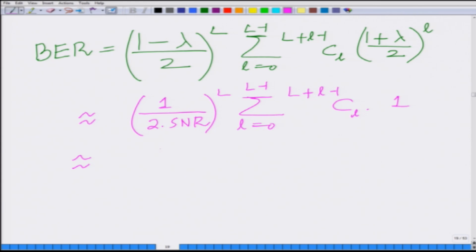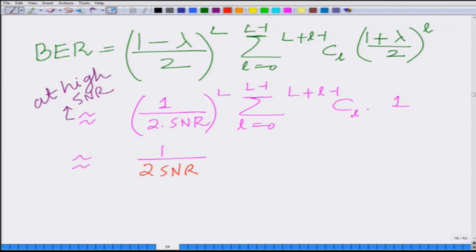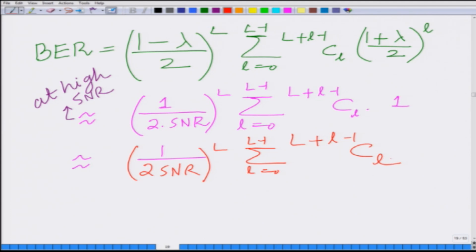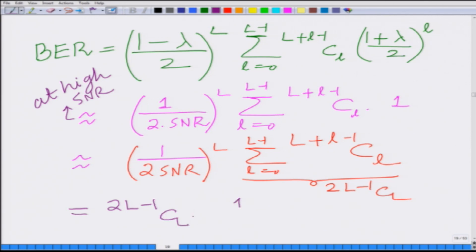Since (1+λ)/2 ≈ 1, the term 1^l = 1. The summation Σ(l=0 to L-1) C(L+l-1, l) can be shown to equal C(2L-1, L). Therefore, the high-SNR approximation for the BER is: C(2L-1, L) · (1/(2·SNR))^L.